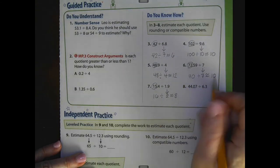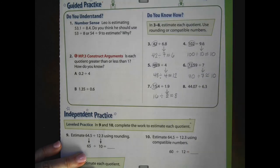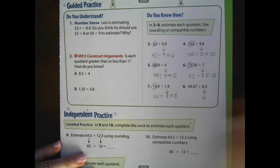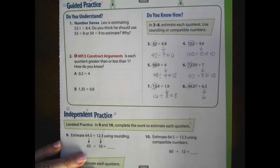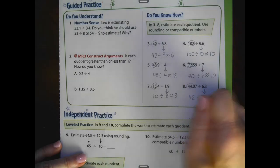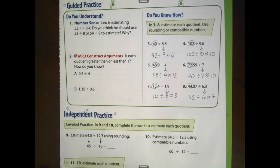And number 8, I am looking at a divisor that is a decimal number. So I'm going to round it to the nearest whole number. I know that a number close to that whole number 44 that's divisible by 6 is 42. 42 divided by 6 gives me an estimated quotient of 7.